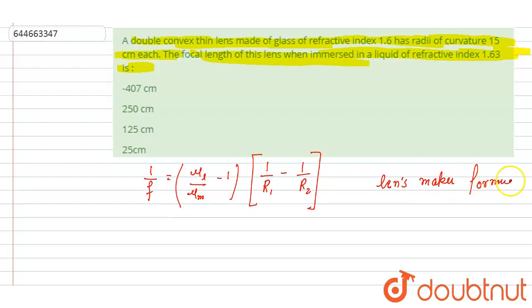So you can put the values to get this focal length. If you see here, the lens is having a refractive index, this medium in which it is kept is having a refractive index 1.63 minus 1.